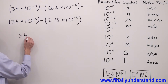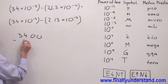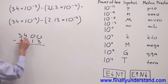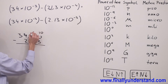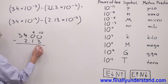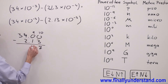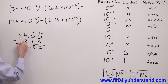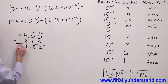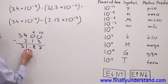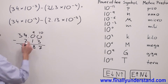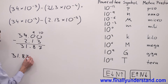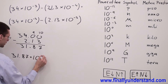I have 34.00 minus 2.13. I have to borrow 1 from here — this becomes 10 and 9 over here. 10 minus 3 is 7. 9 minus 1 is 8. Bring down the decimal point. 3 minus 2 is 1, and I simply copy down 3. So my answer is 31.87, and I copy down the power of 10. So my answer is 31.87 times 10 to negative 3.